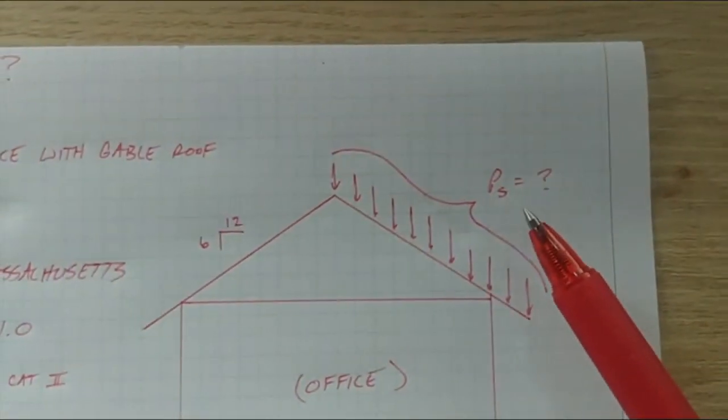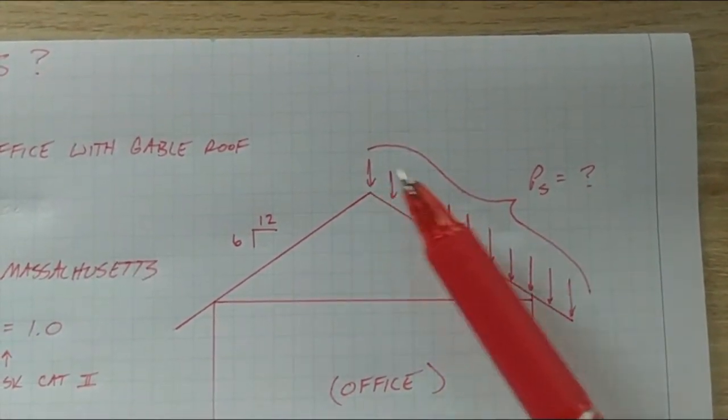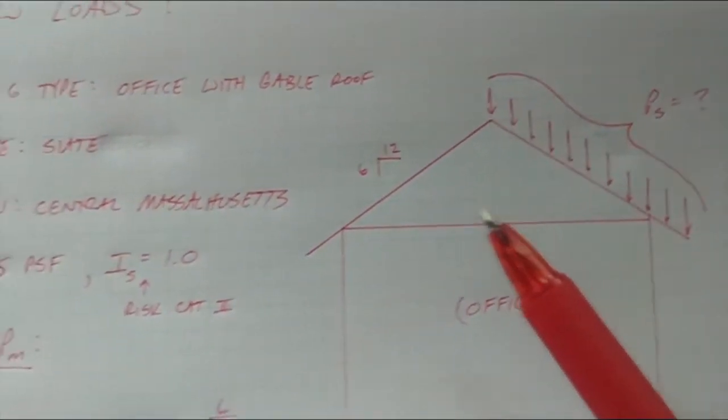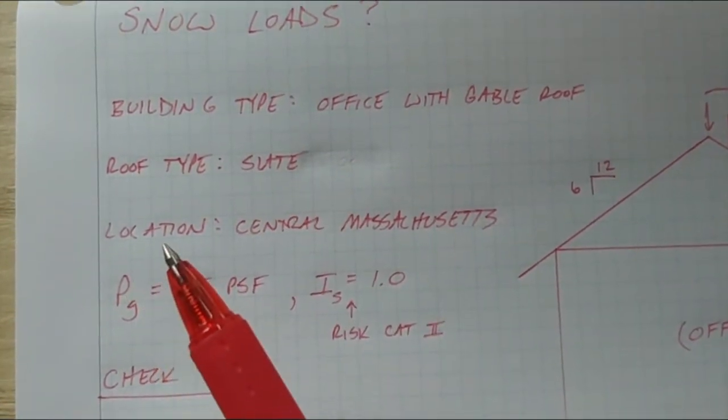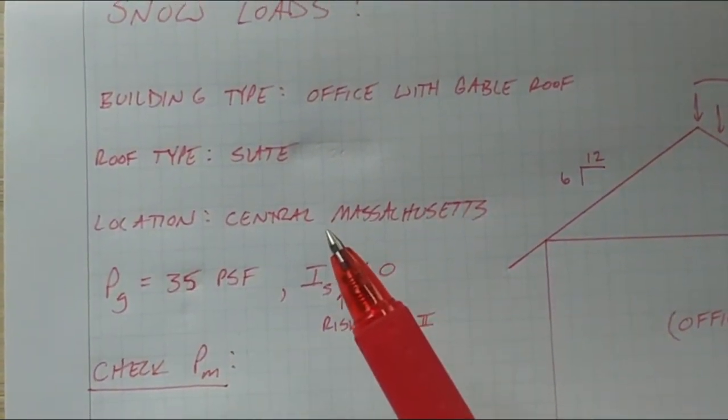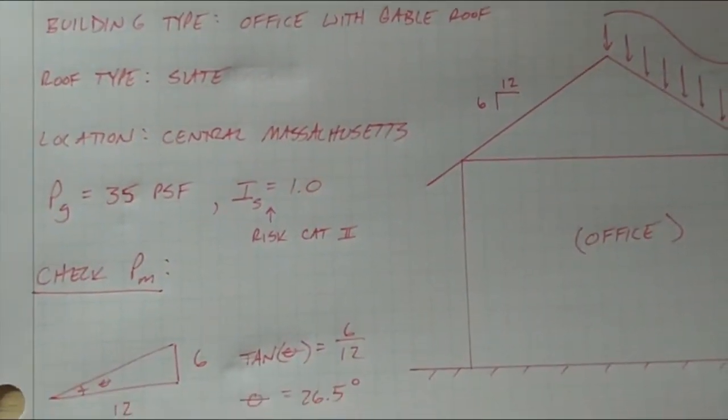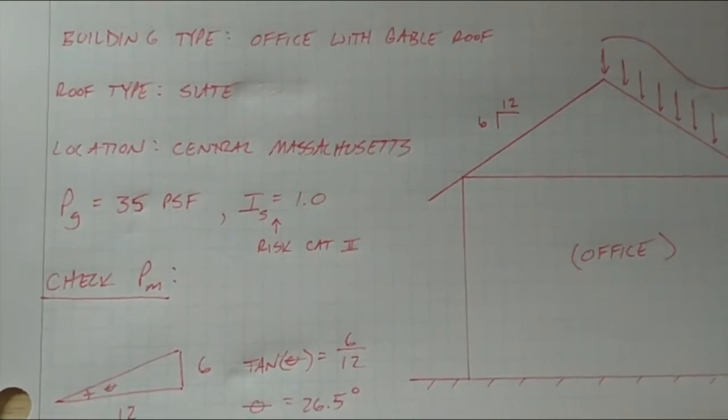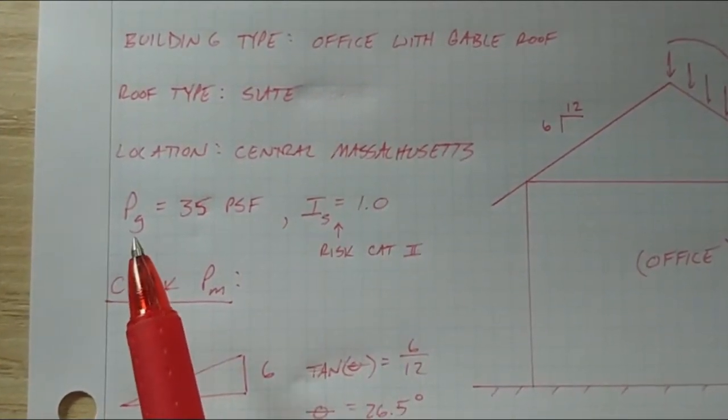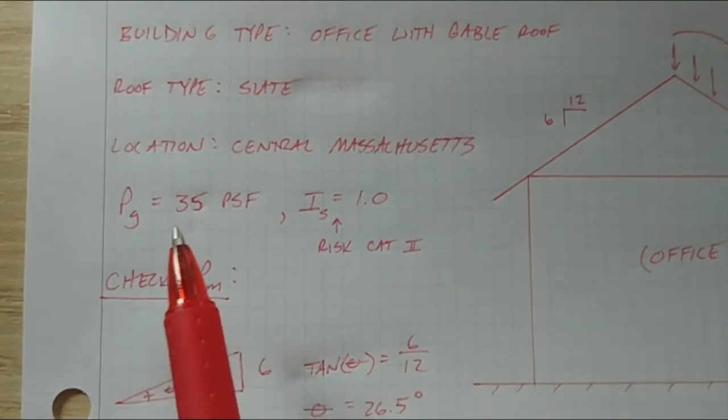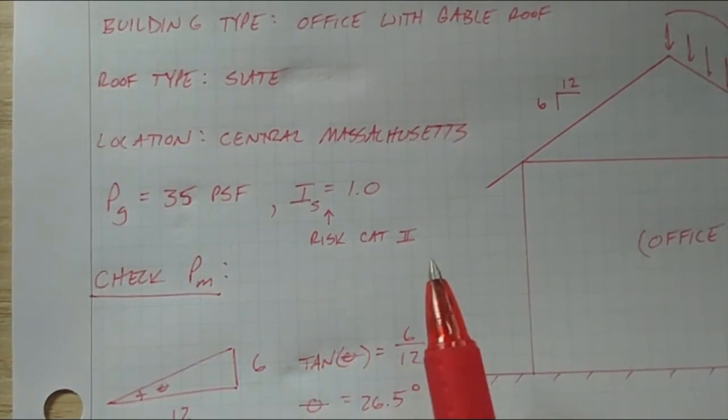We need to find today what our P sub S is. That is our roof snow load, designated as P sub S, kind of like a loading pattern like this. We have our roof type defined as slate roofing and our location. We are going to call this office building being constructed in central Massachusetts, a little shout out to my home state.